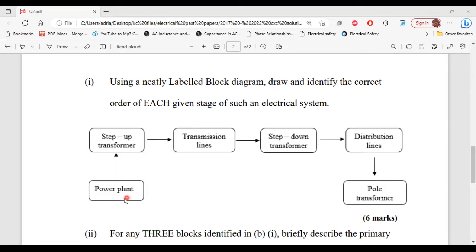First up, we have the power plant. From the power plant, we have the step-up transformer, then the transmission lines, then the step-down transformer, then distribution lines, and finally, pole transformer. So this is the block diagram and the correct order in terms of the stages.